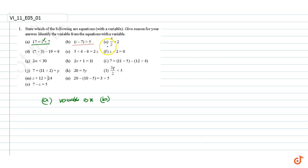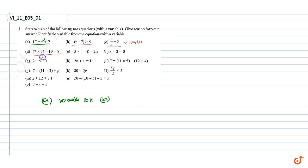Part c: this is a numerical equation, there is no variable. Part d: again, this is a numerical equation, there is no variable.